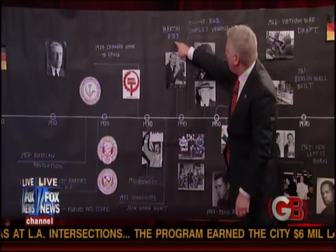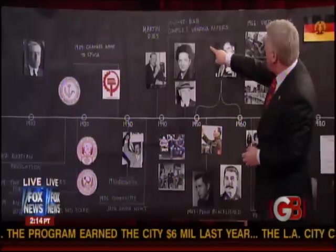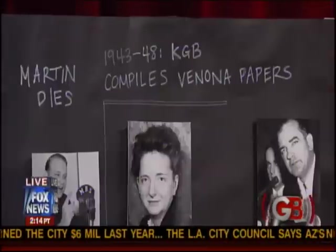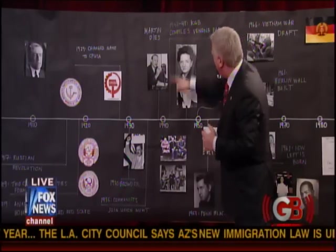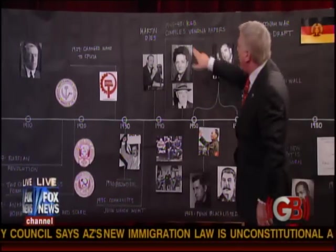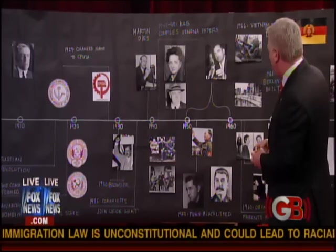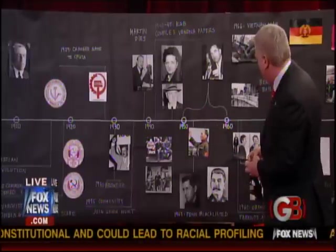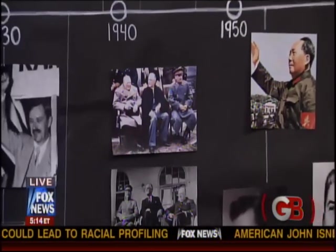Remember this name: Martin Dees. Here you have the KGB compiling the Venona Papers. This was a translation of what was really going on — this was secret spying. The KGB compiled this between 1943 and 1948. Here you see Stalin with Churchill and FDR. This is an interesting time.